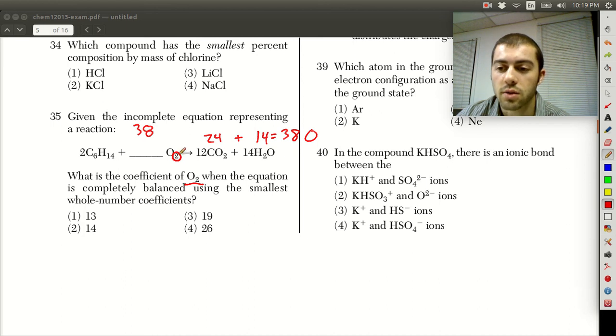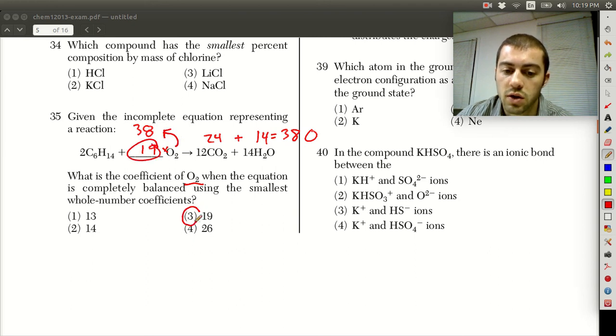or there's two oxygen atoms in each oxygen molecule, because it's diatomic. So to figure this out, we just need 19 here, because 19 times 2 would give us 38. So 19 is going to be our answer. That would be choice 3.